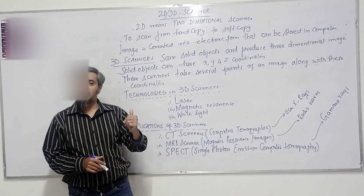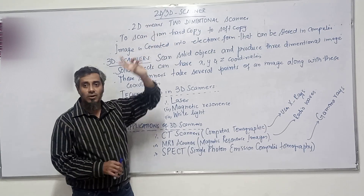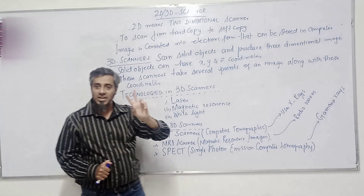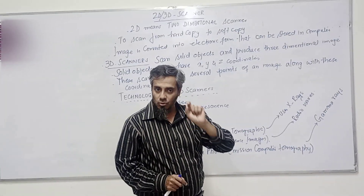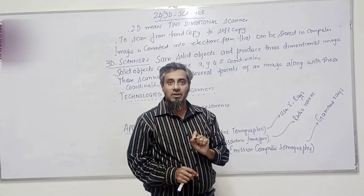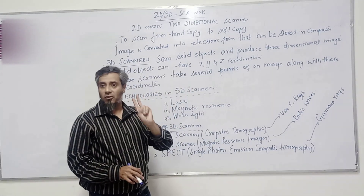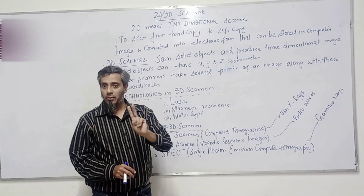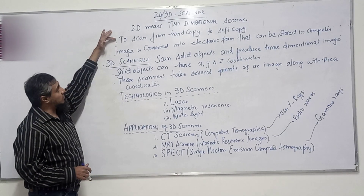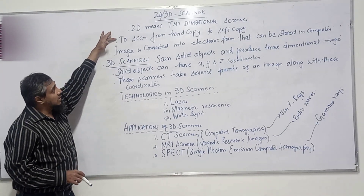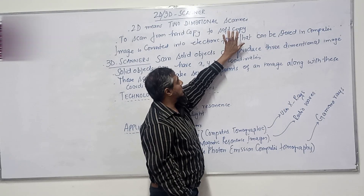2D is a 2-dimensional scanner, so we have only 2 coordinates in it: the X-axis and the Y-axis. The hard copy will be scanned in a 2-way direction only. The purpose of the scanner is to scan from the hard copy to the soft copy.